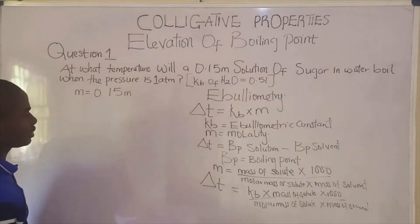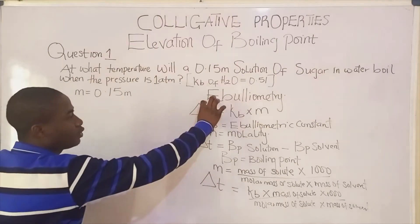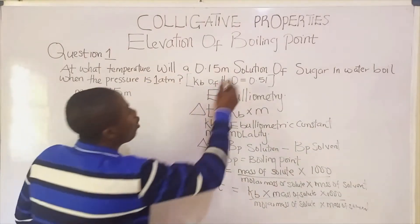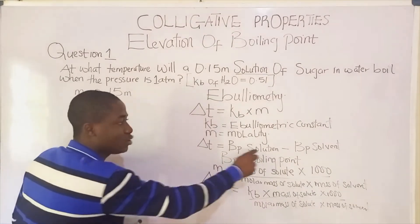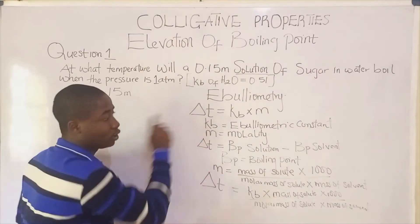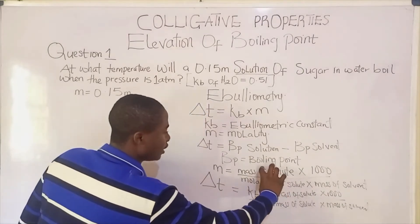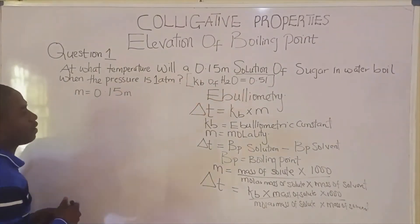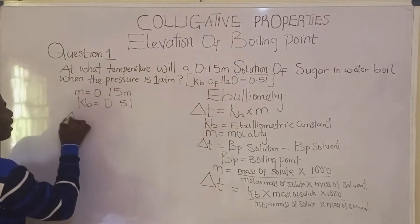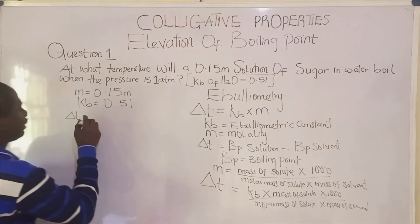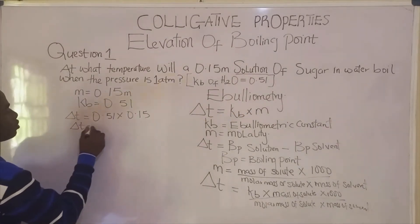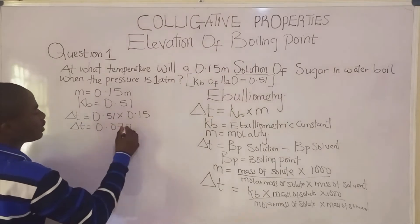Since the molality is already given as 0.15, we use the first equation directly. Delta T equals KB times m, which is 0.51 times 0.15. So delta T becomes 0.077 degrees Celsius.